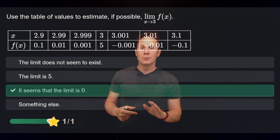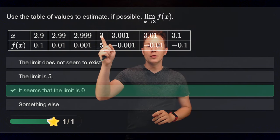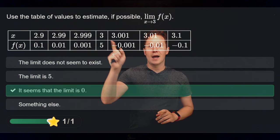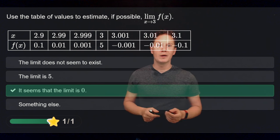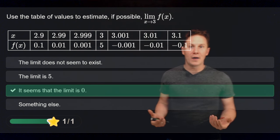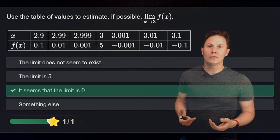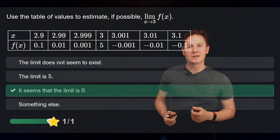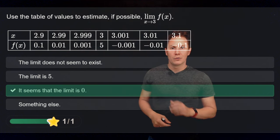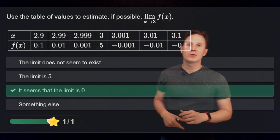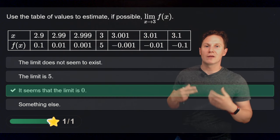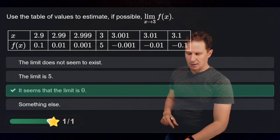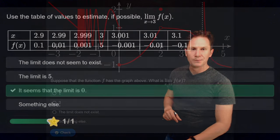Note that we do not care about the value of the function at exactly x = 3, because it may not even be defined at that point — as we saw in the first example. We only care about the function's behavior as x approaches our point of interest.